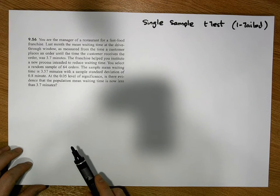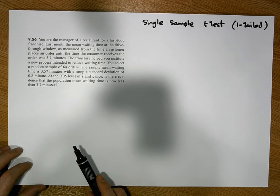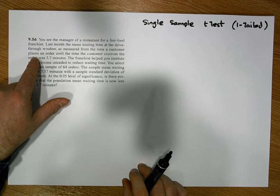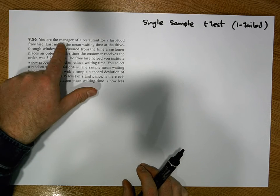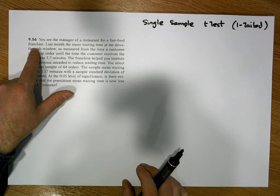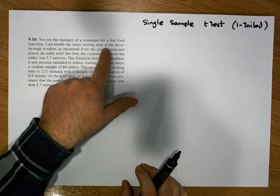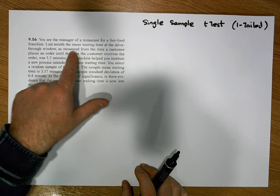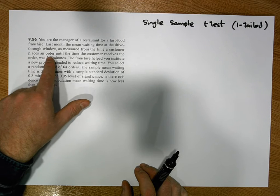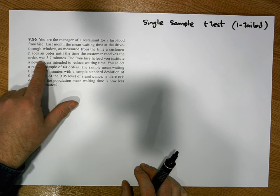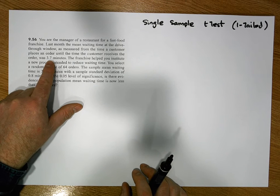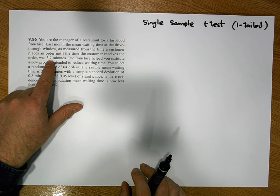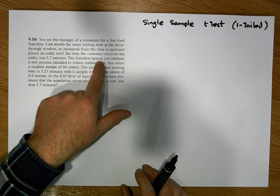This particular scenario relates to a fast food franchise restaurant and the mean waiting time at the drive-through window, measured from the time a customer places an order until the customer receives the order. Last month the mean waiting time was 3.7 minutes — this is the status quo, the average waiting time in the past.